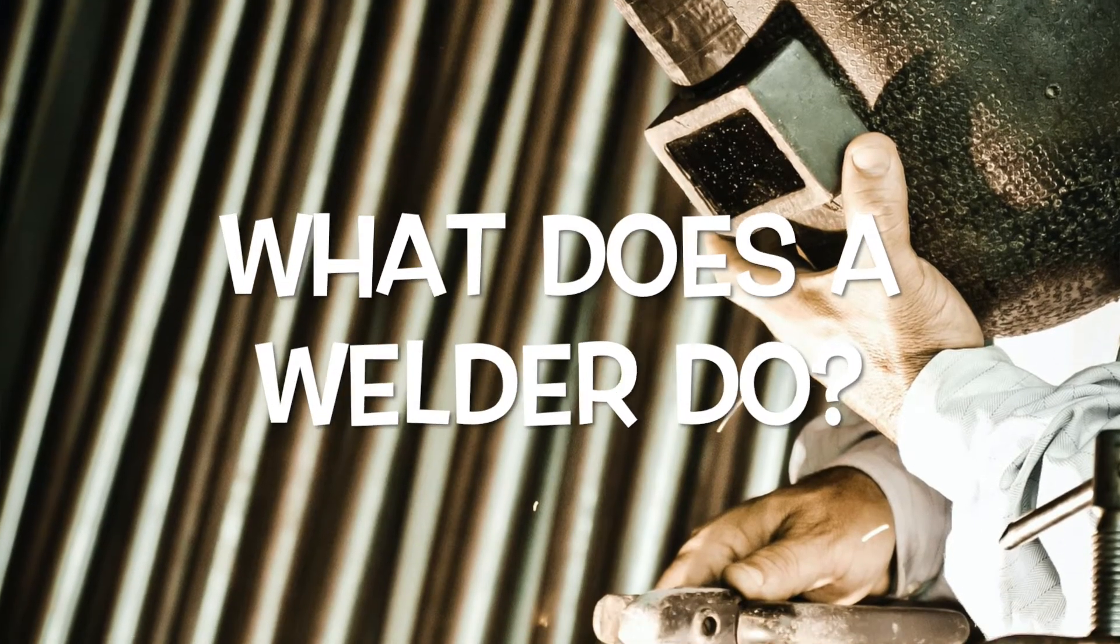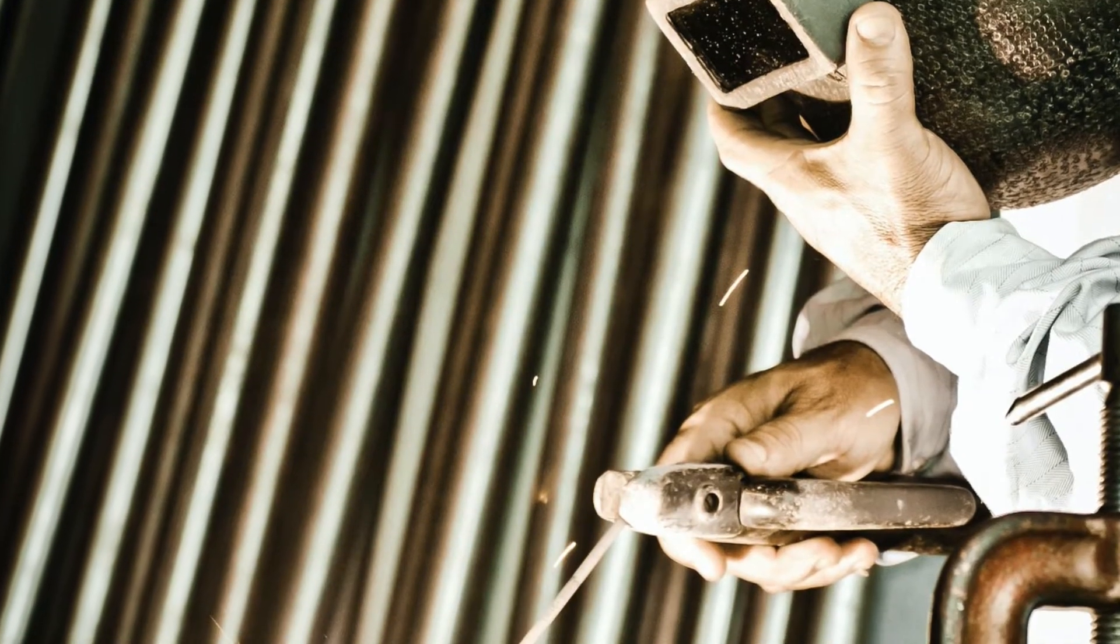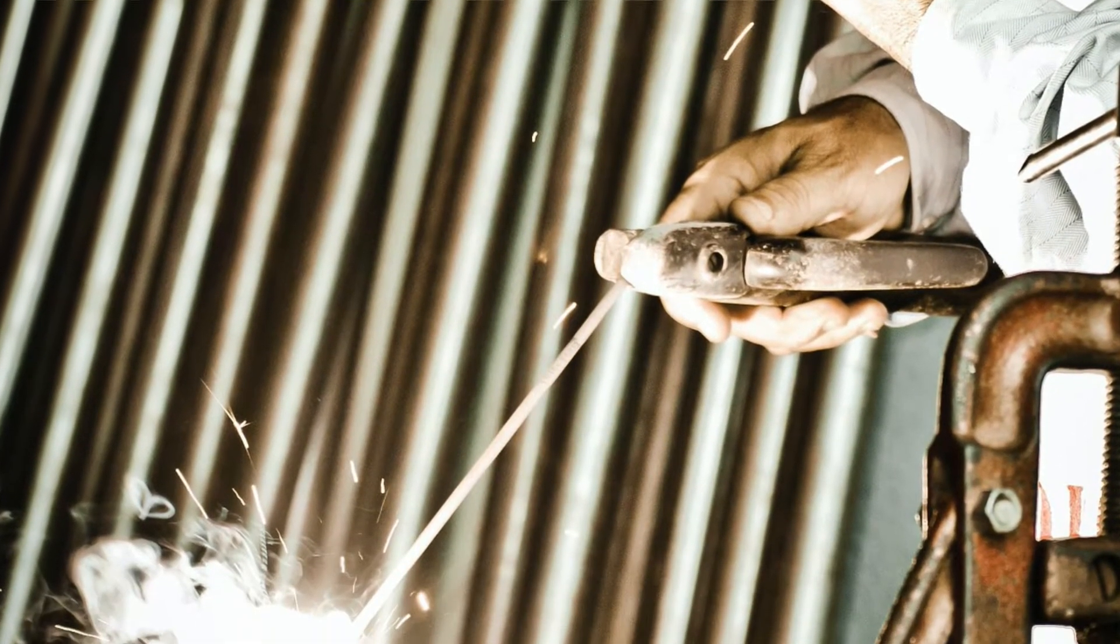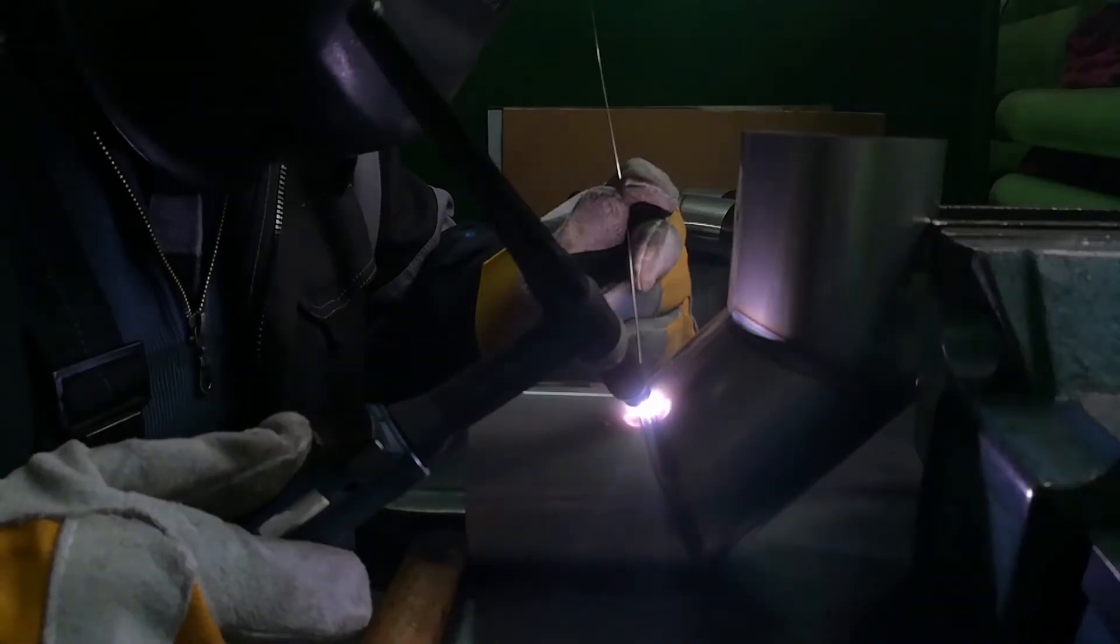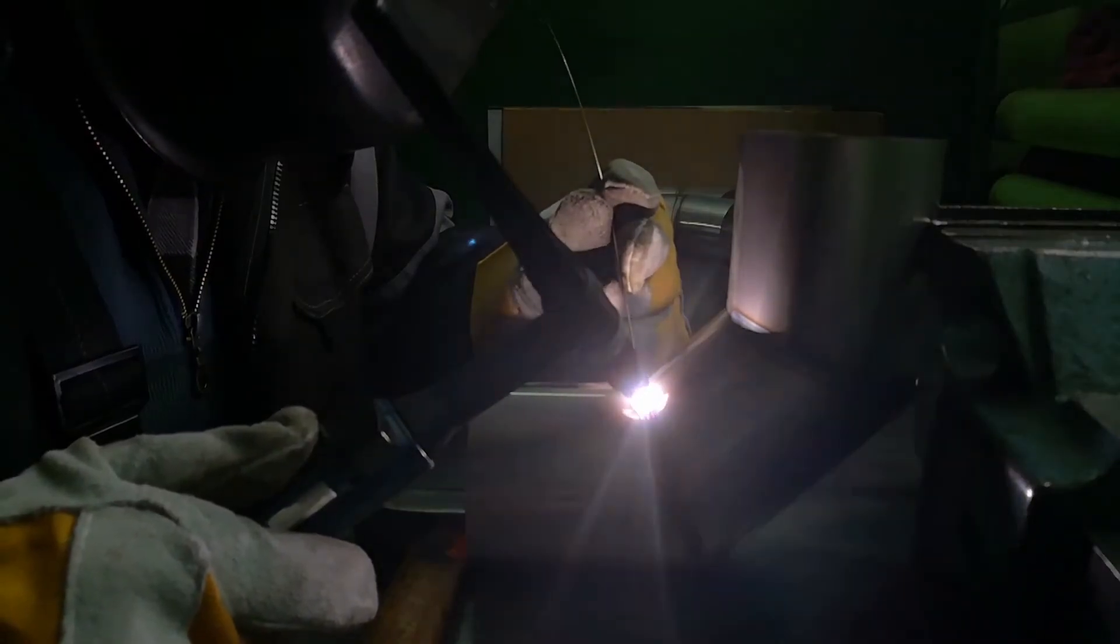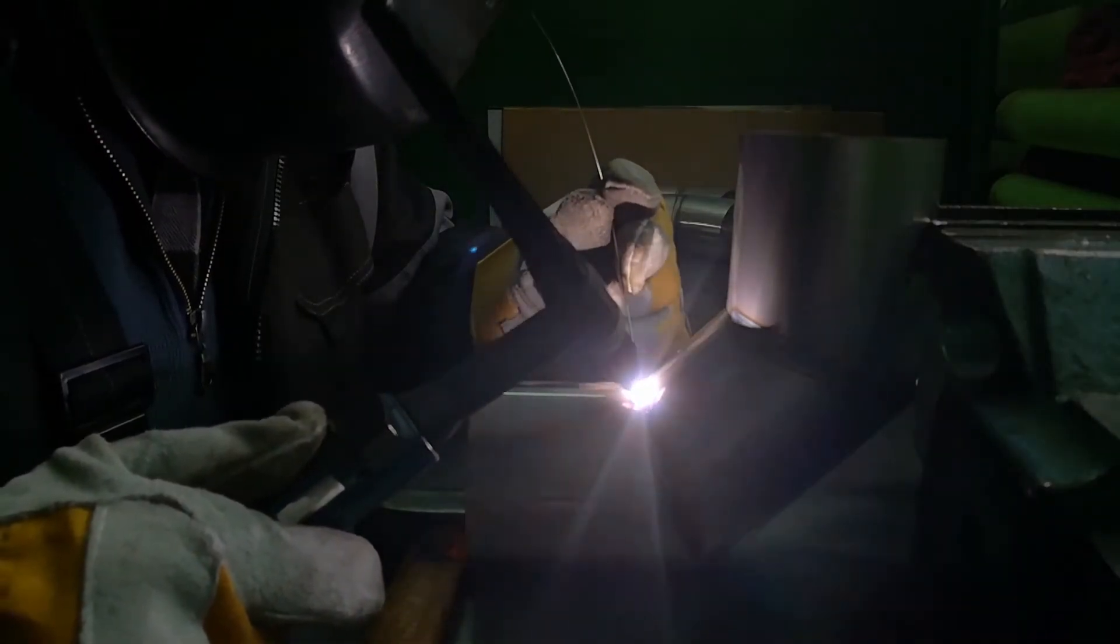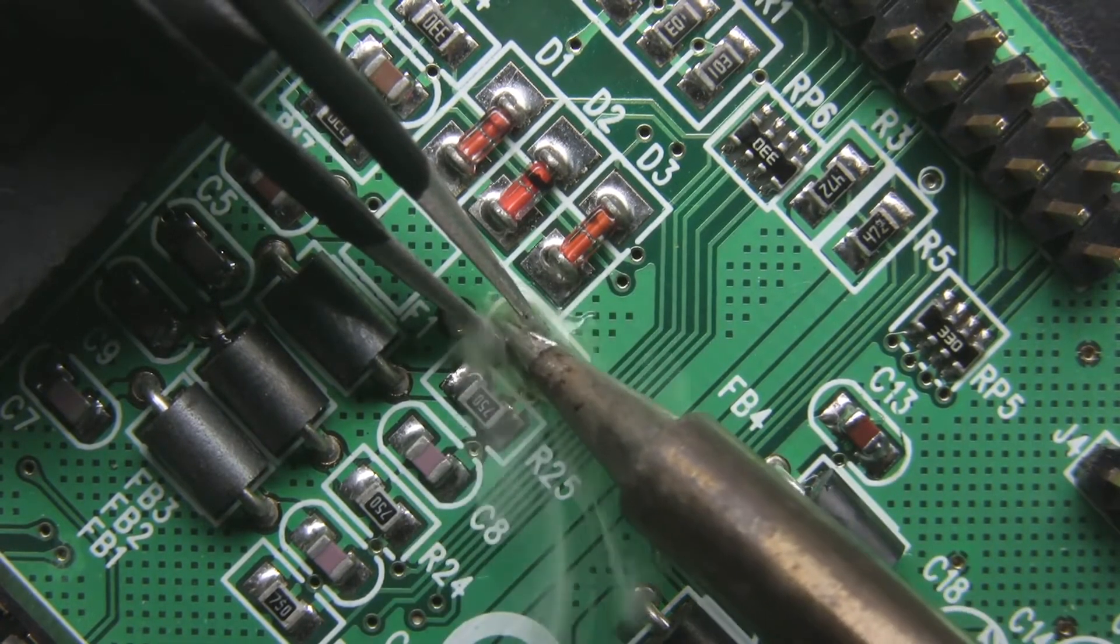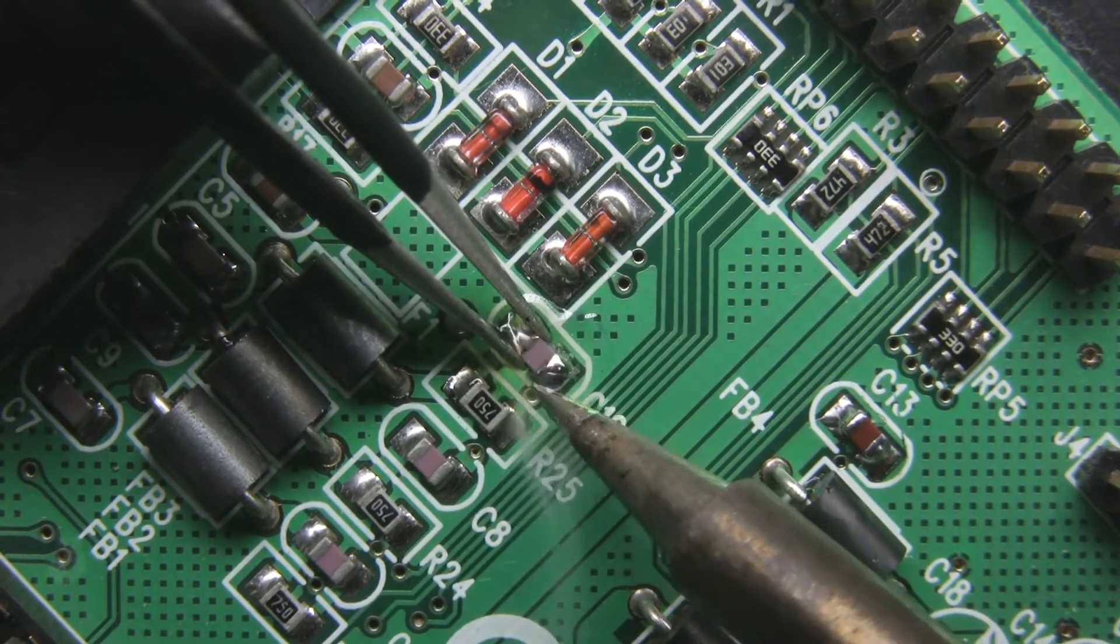What does a welder do? To put it in very simple terms, you have two items you need to join together. Welding is the process of joining items together by high heat to the point of melting these items together. This could be metal beams joined to each other, and it could be circuits to a circuit board. A welder is going to do just that, basically melt stuff together.